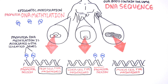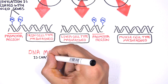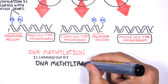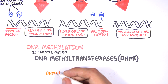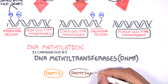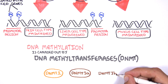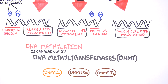DNA methylation is carried out by a group of enzymes known as DNA methyltransferases, or DNMT for short. We have three major types: DNMT1, DNMT3A, and DNMT3B. Let's have a closer look at how they work.